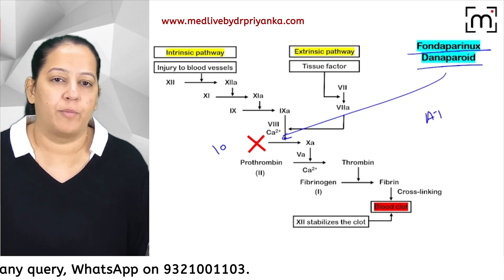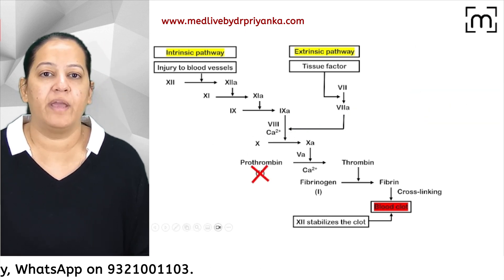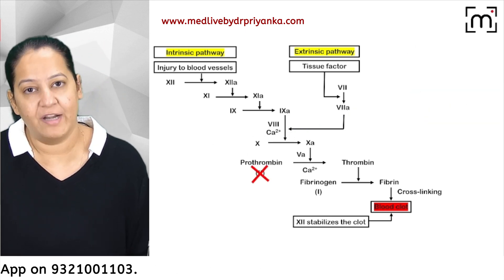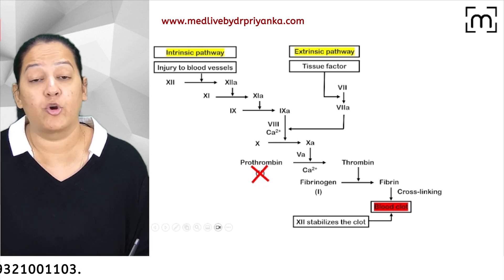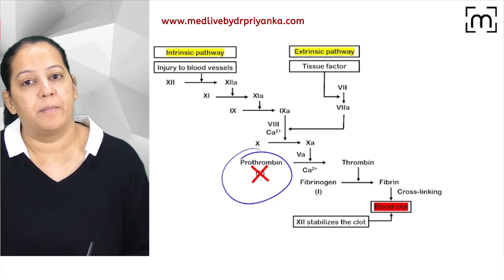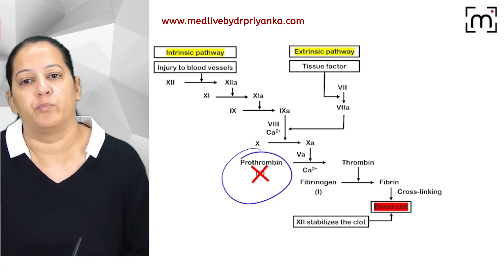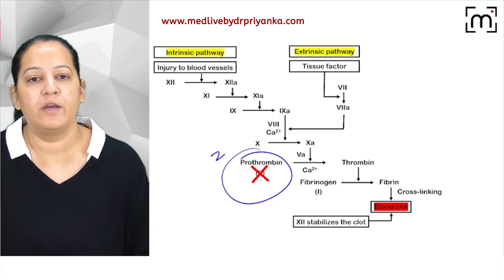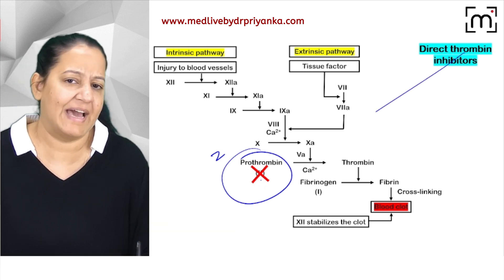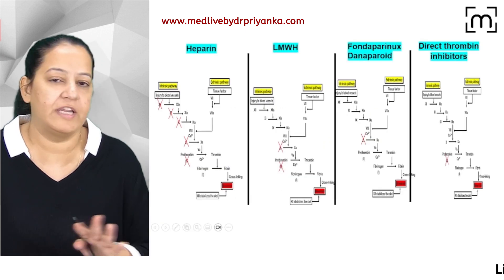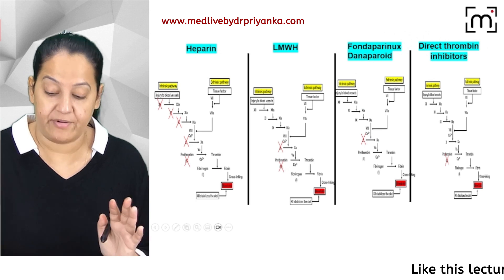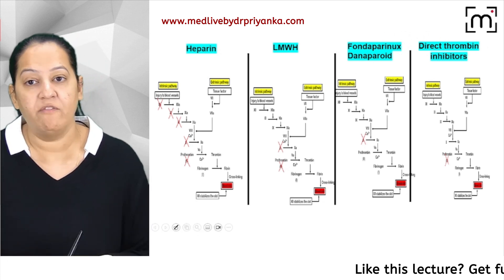These three indirect parenteral agents act via antithrombin 3. The direct parenteral agent — argatroban — inhibits only factor 2, and it does so directly, without the need for antithrombin 3.